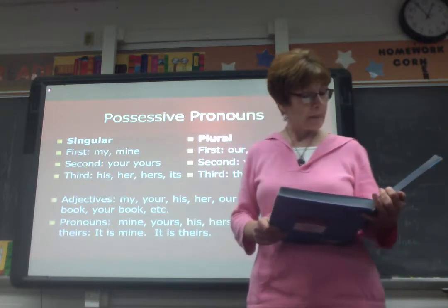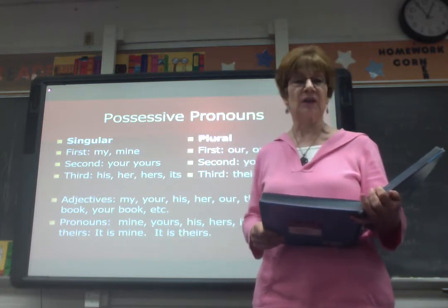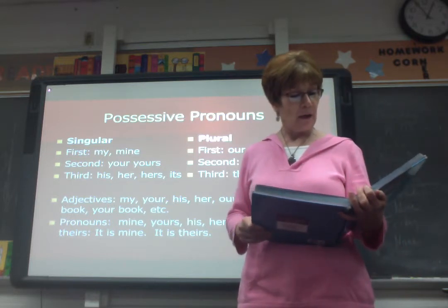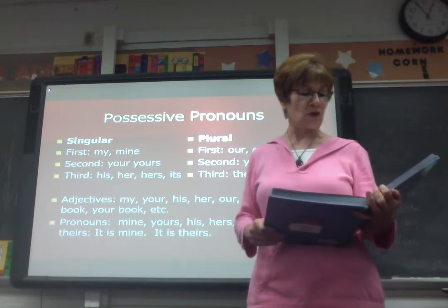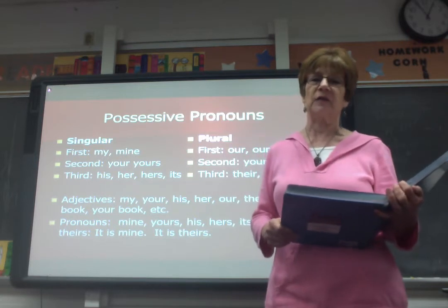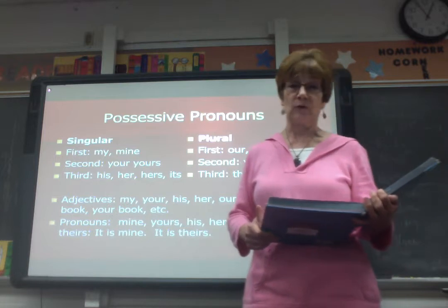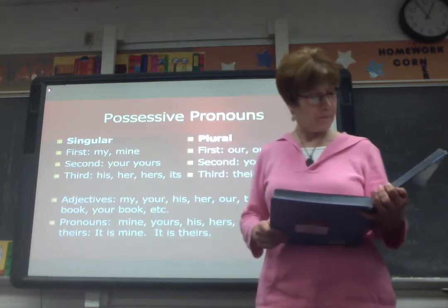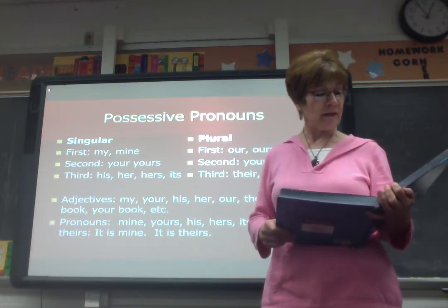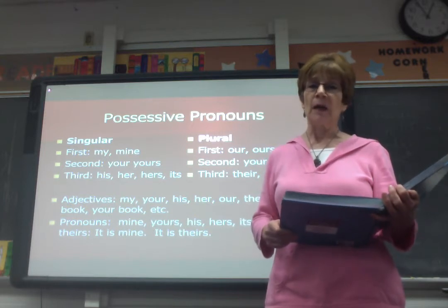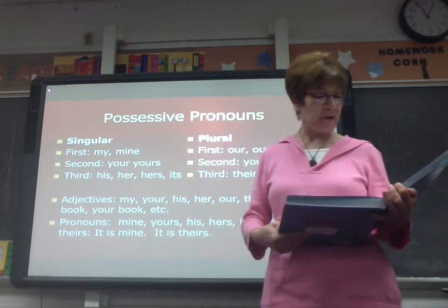Number two: the antecedent does not always go before the pronoun. Sometimes the antecedent comes after the pronoun. Here's the example sentence: 'Although she was late, the announcer walked slowly.' 'She' is our pronoun, and in this sentence the antecedent is after the word 'she.' So we know 'she' means the announcer. Number three: the antecedent of one pronoun may be another pronoun. 'By seven o'clock, I had turned off my radio.' 'My' is the pronoun and its antecedent refers to 'I.'